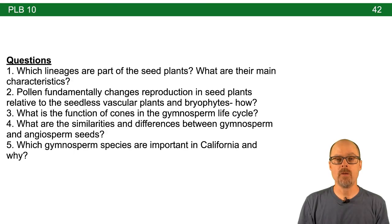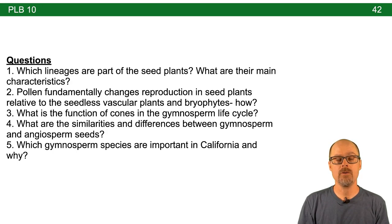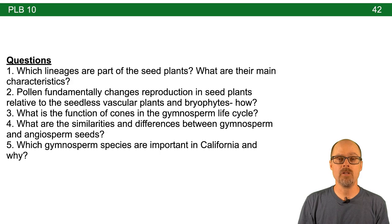In this lecture we introduced the gymnosperms and discussed the shift in the role of spores and gametes in the seed plant life cycle. One recommendation is to take a blank sheet of paper and reconstruct the drawing made in this lecture. We also talked about the diversity of gymnosperms with special emphasis on those that occur in California. If you have time, depending on where you live, try to find some examples — gymnosperms occur broadly, especially conifers. If you have any questions, please reach out or meet me in Zoom office hours. Thanks and see you next time.